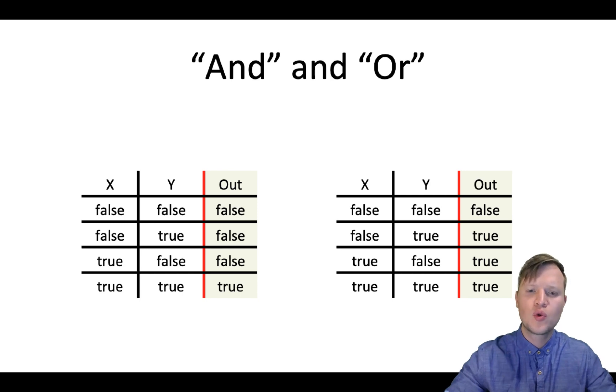Then the truth table for the OR gate or OR operator, if x and y is false the result will be false. And then if x is true or only y is true or both of them is true the result or the output will be true. And that's the big difference between AND and OR gate.